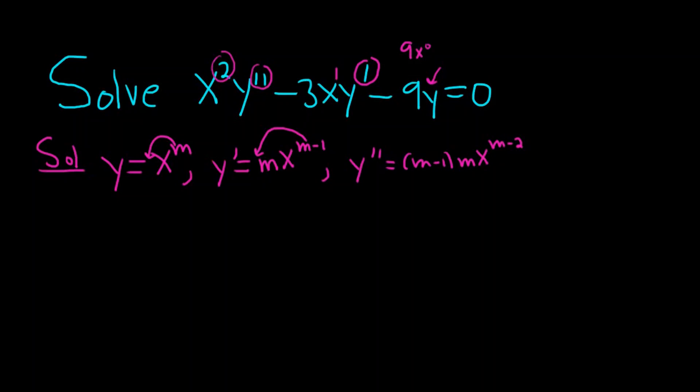So now all we have to do is plug everything into the DE. So we have x squared and then y double prime. That's this stuff here, so I'm going to write it again over here. So m minus 1, m, x to the m minus 2, minus 3.